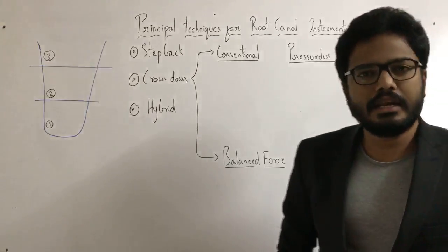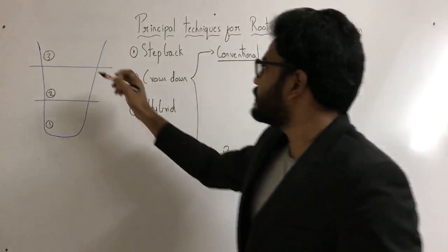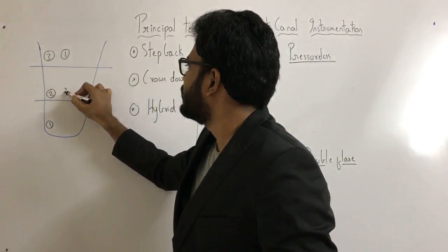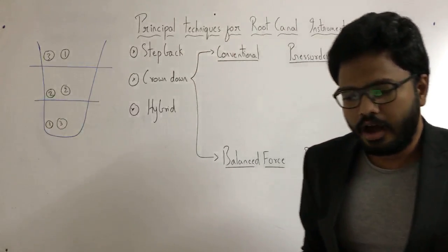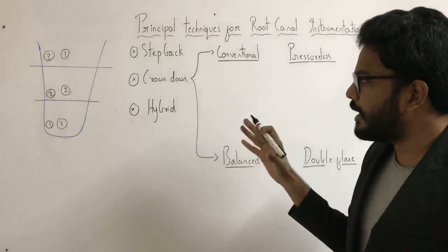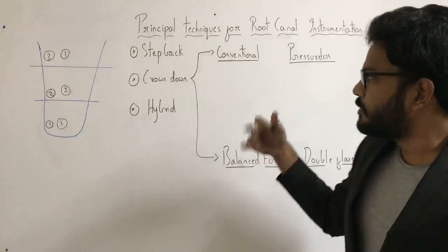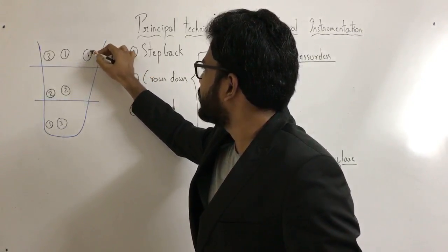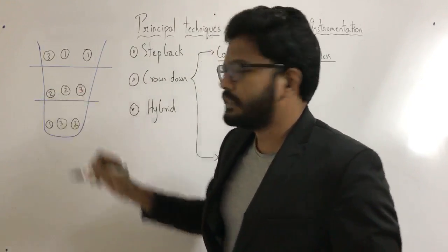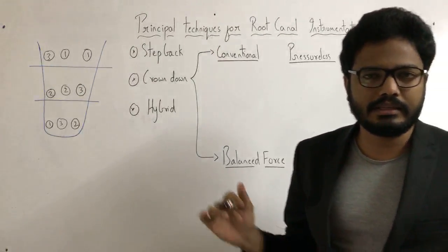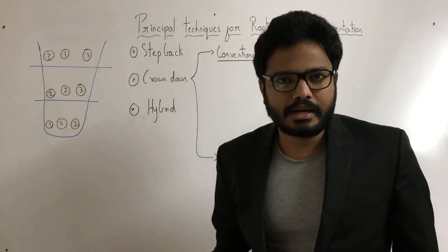Crown down, as the name itself indicates, we start from the coronal third and then move towards the apical third — coronal, middle, and apical. The hybrid technique optimizes the advantages of both step-back and crown-down. We use a combination: first we start with the coronal third, followed by the apical third, followed by the middle third. As for scientist names, it's better if you can memorize them.